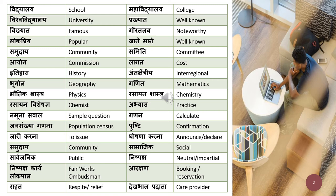Nishpaksh means 'impartial' or 'neutral' — for example, 'he was an impartial person.' Nishpaksh karya lokpal is the Fair Works Ombudsman. In Australia you have a Fair Works Ombudsman. If you don't know the Hindi translation in a dialogue, you can use the English version, but using the Hindi version — nishpaksh karya lokpal — will create a better impression.